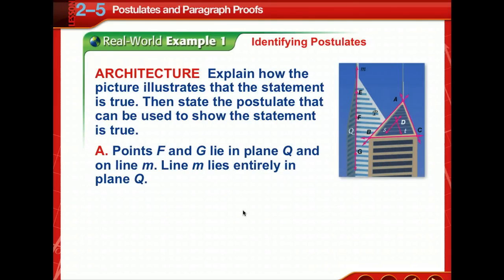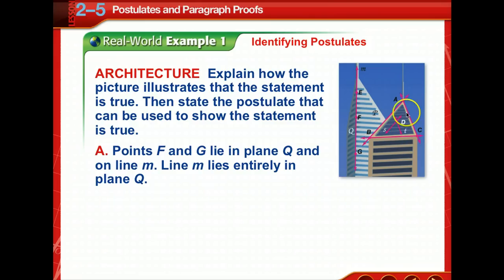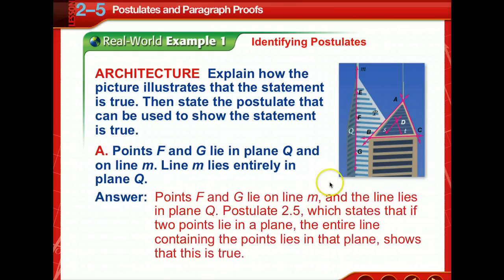Let's look at a real-world example. We have a picture of some buildings, and we're to explain how the picture illustrates that a statement is true, then state the postulate that can be used to show it. We have planes P and Q, lines AB, BC, and AC, and line M which contains E, F, and G. Points F and G lie in plane Q and on line M, so line M lies entirely in plane Q. Postulate 2-5 states that if two points lie in a plane, the entire line containing the points lies in that plane — and that shows this is true.